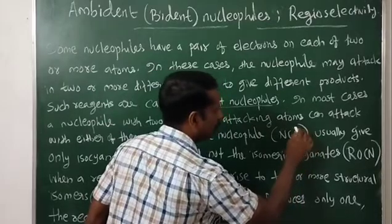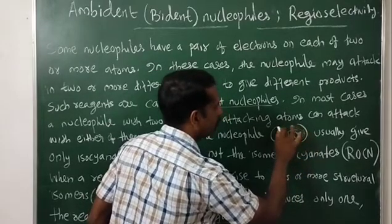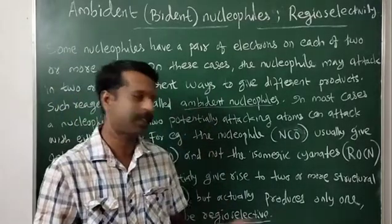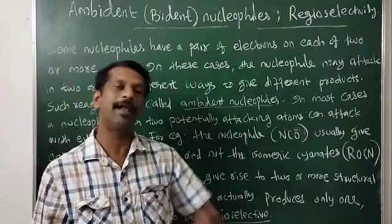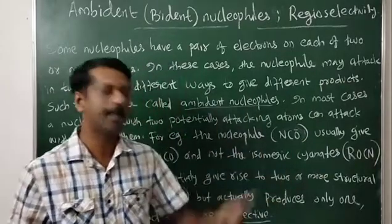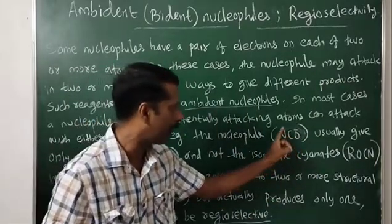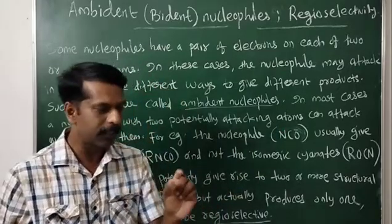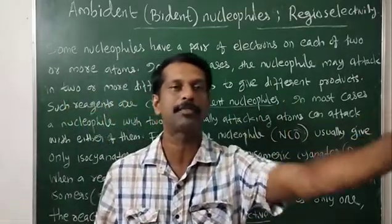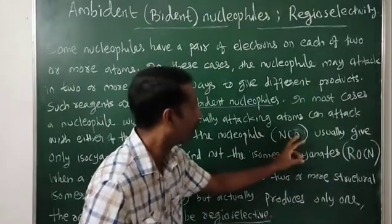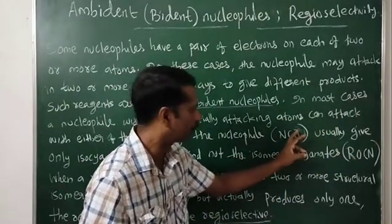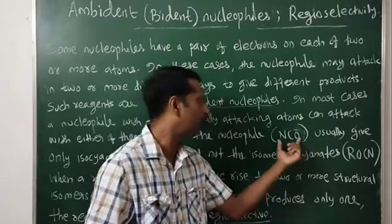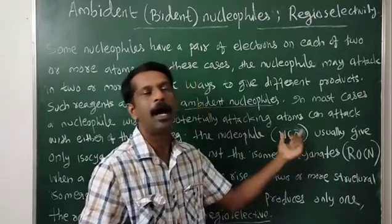In NCO⁻, there are two different sites to attack the substrate molecule. The nucleophile can use either the nitrogen atom — which has a pair of electrons — to attack the substrate molecule, or it can use the oxygen atom to attack the substrate molecule. Such molecules are known as ambident nucleophiles.